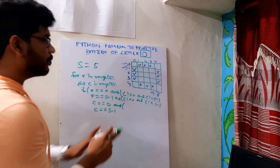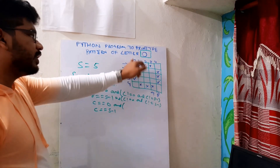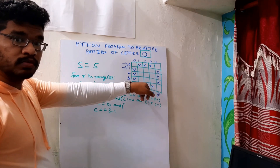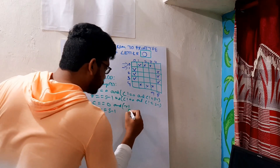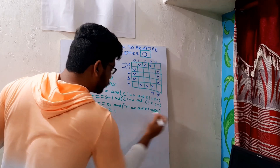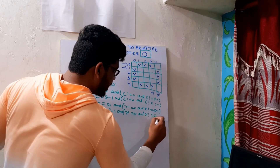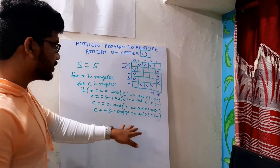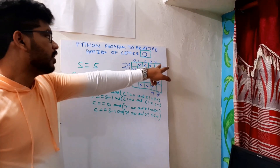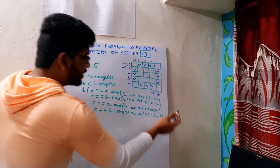For the columns, it will be the same but instead of column conditions you write row conditions. In the first column, the row should not be equal to the first row and should not be equal to the last row. So write: R not equal to 0 and R not equal to S minus 1. Similarly for the last column: R not equal to 0 and R not equal to S minus 1. So these are the conditions for printing stars on the column sides.